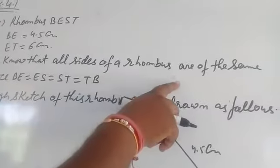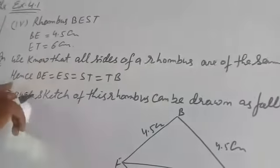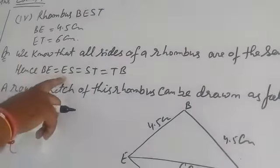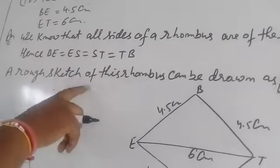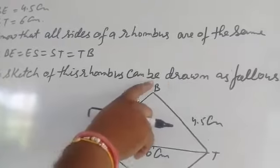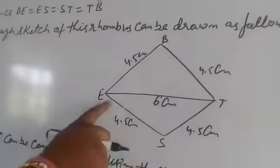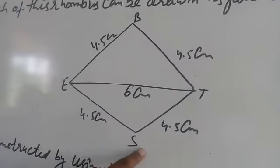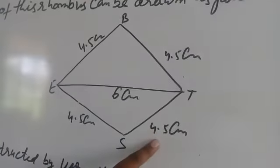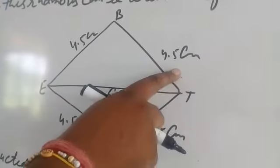Hence, BE = ES = ST = TB = 4.5 cm. A rough sketch of this rhombus can be drawn as follows: ET = 6 cm (diagonal), ES = 4.5 cm, ST = 4.5 cm, BT = 4.5 cm, EB = 4.5 cm.